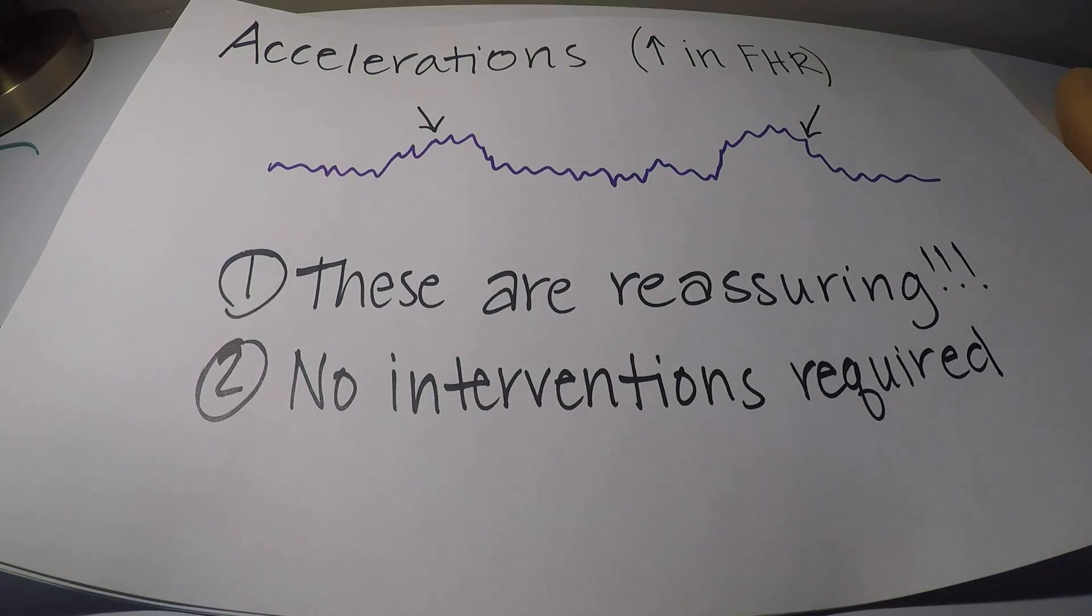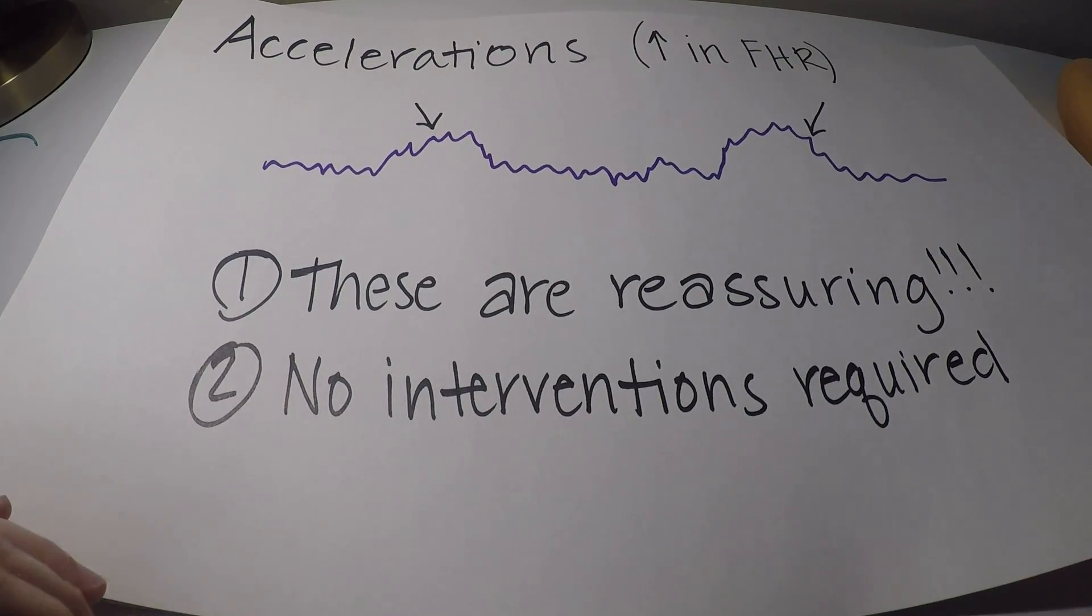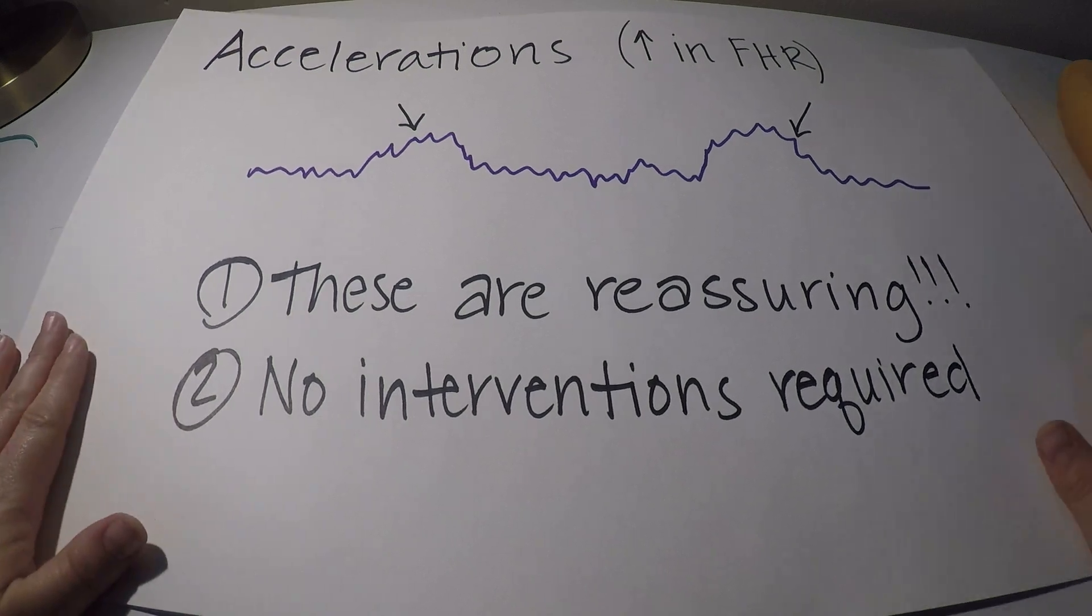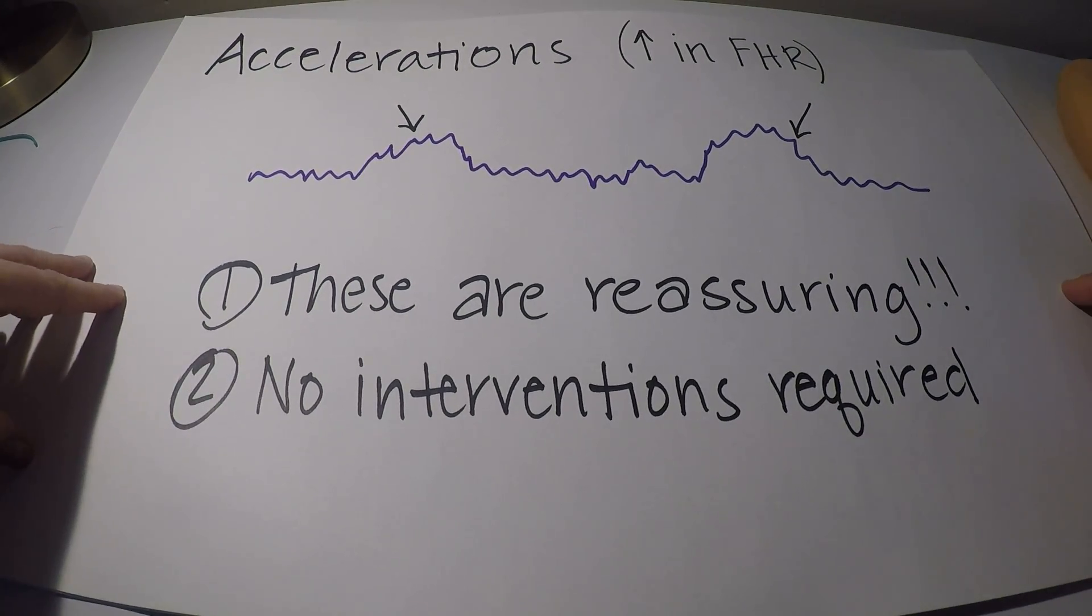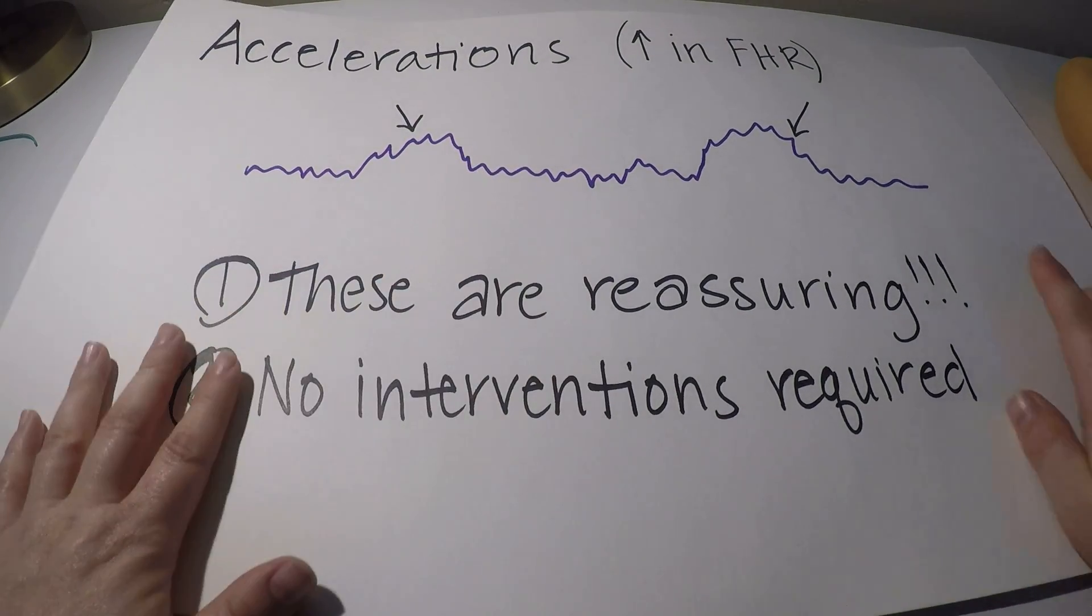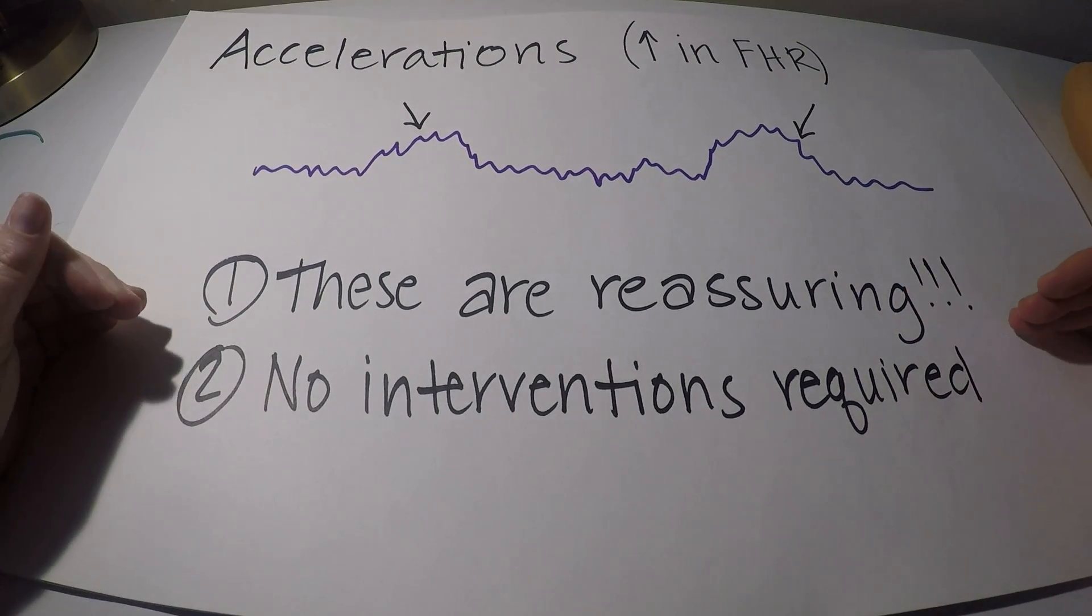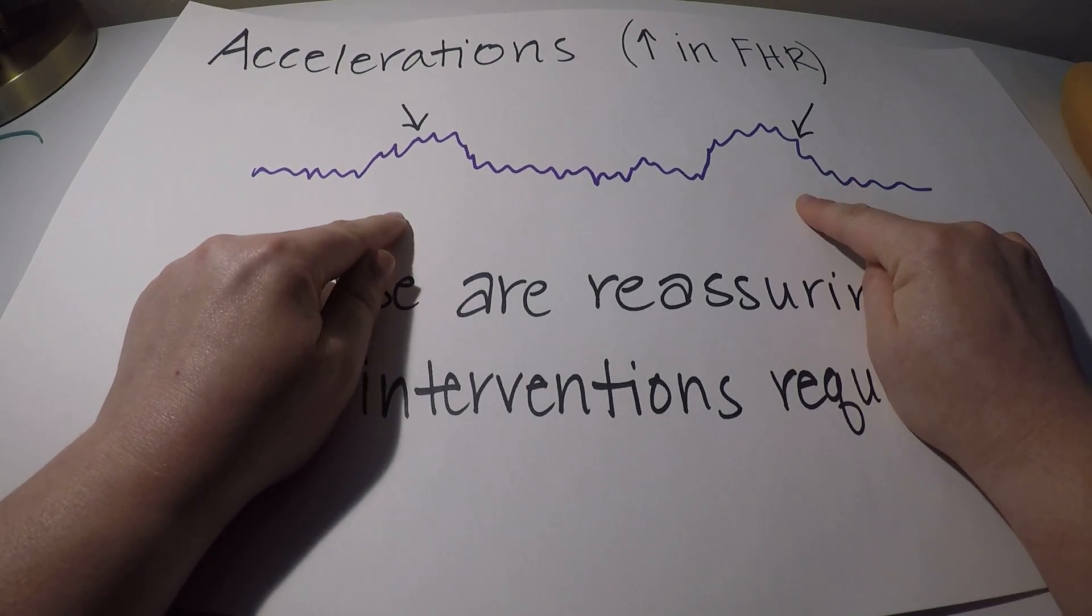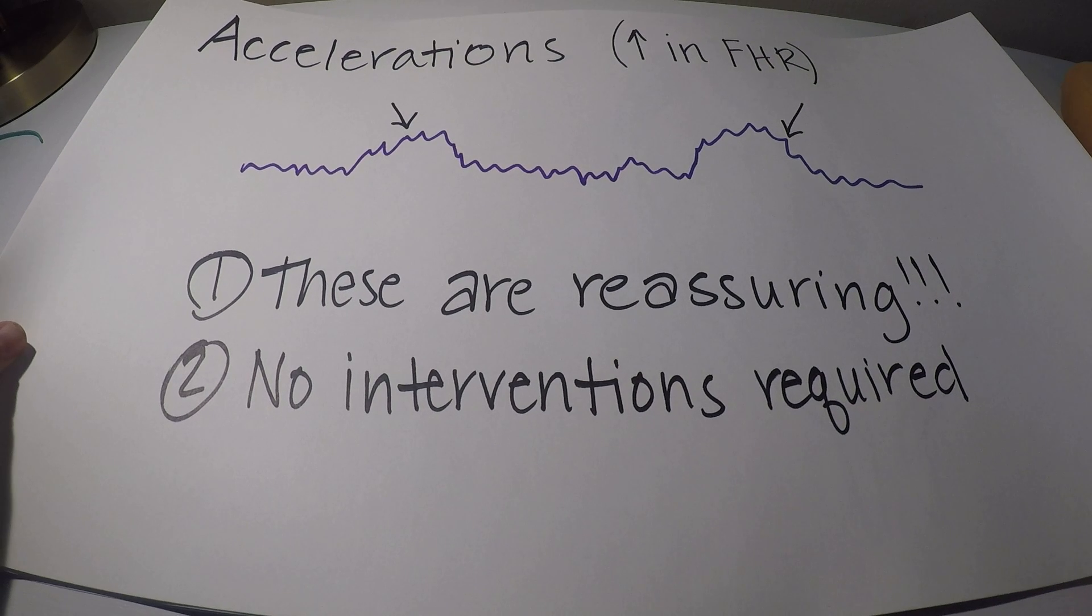I'm just quickly going to put this part in here on accelerations. So accelerations are increases in the fetal heart rate. And the reason I'm throwing these in here is because there's a fun little mnemonic that I'll give you at the end to help you remember all of this. And this is part of that mnemonic. So accelerations are increases in the fetal heart rate. So you can see right here you have an increase and right here you have an increase in the fetal heart rate. These are reassuring and absolutely no interventions are required. When we see these, this means that we have a happy, healthy baby in utero. So these are good. We like those. You do not need to do it.